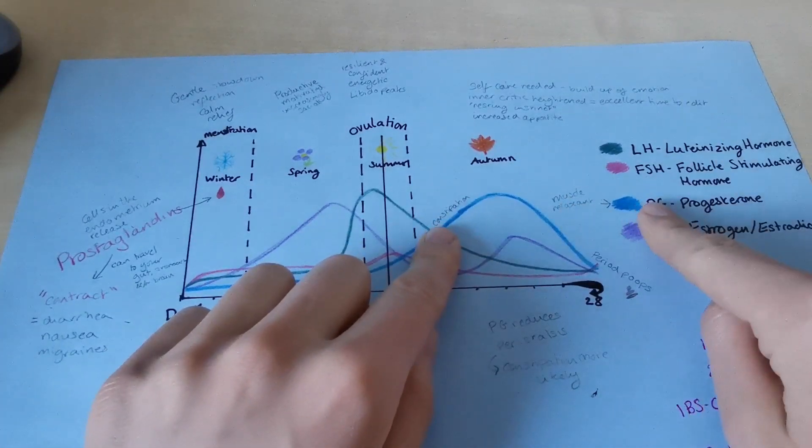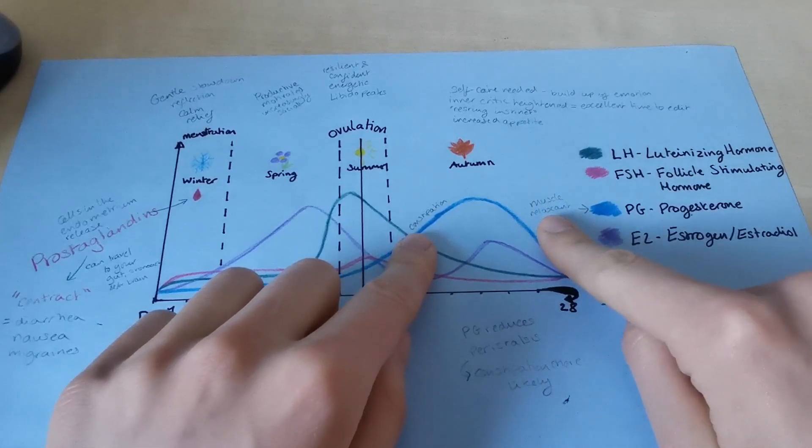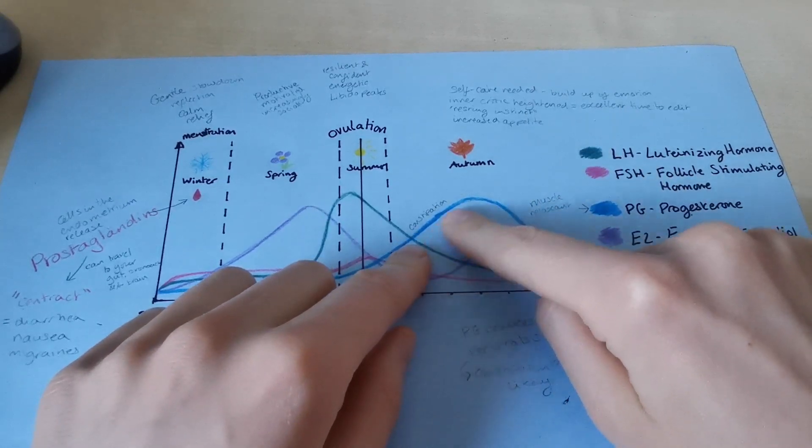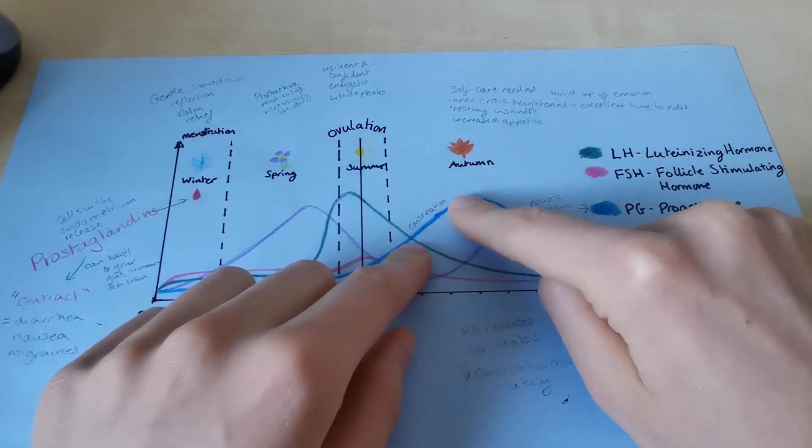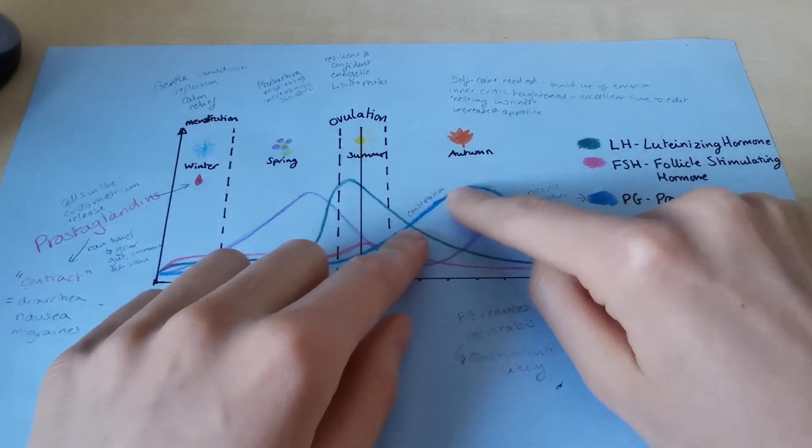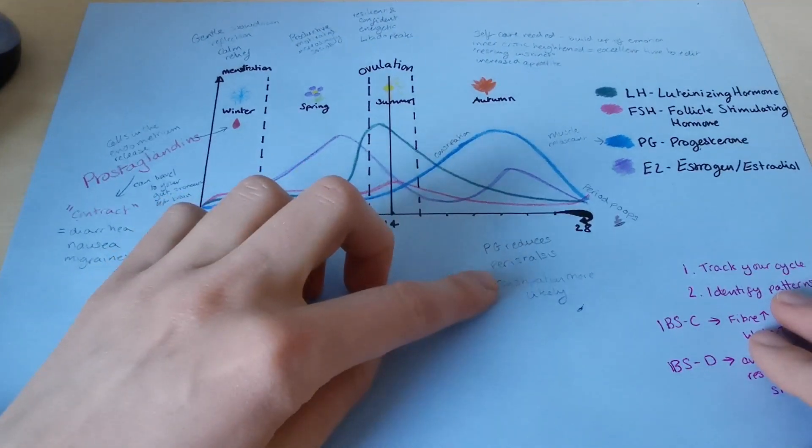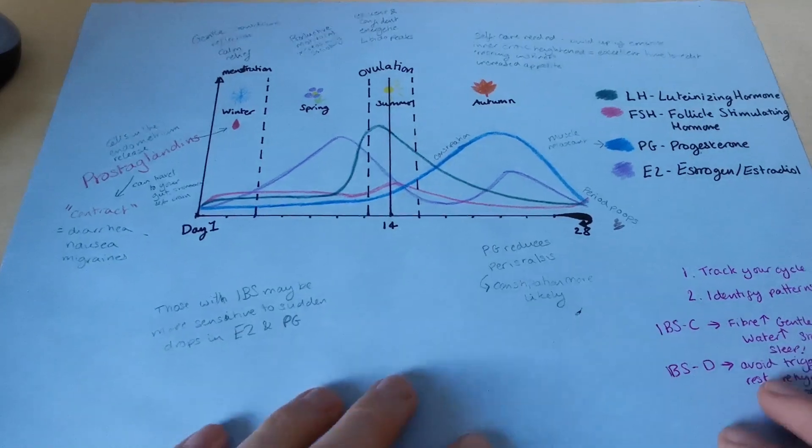We're going to start in autumn. So progesterone is actually a muscle relaxant. So when it's peaking here, you can actually experience constipation or you might be more likely to experience constipation because it reduces the peristalsis movement in your gut.